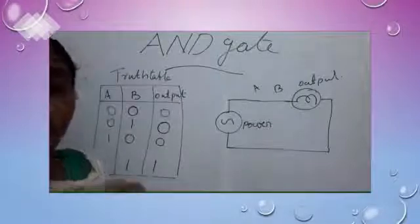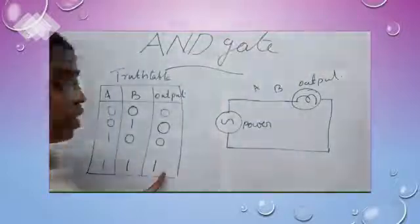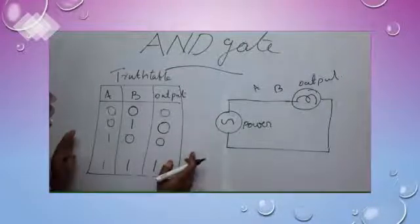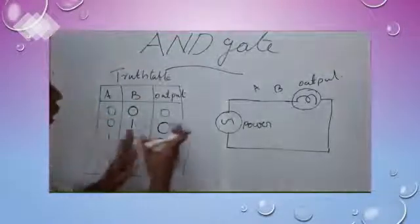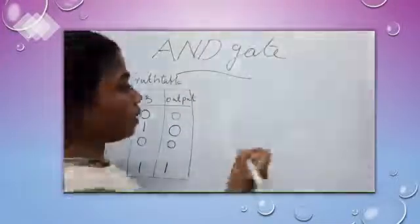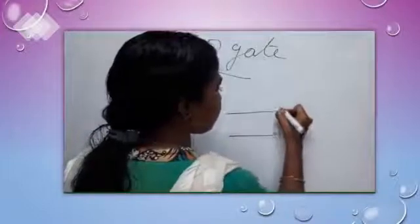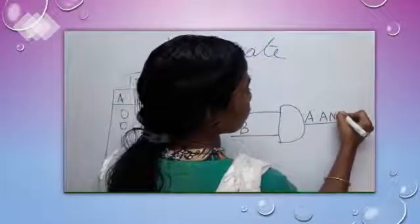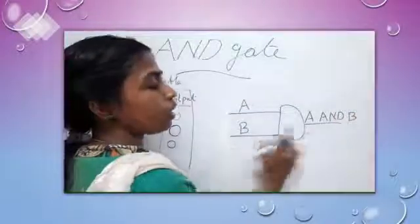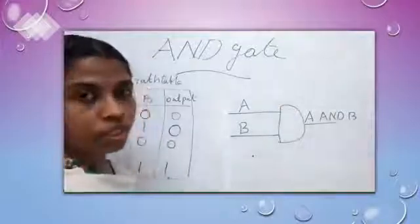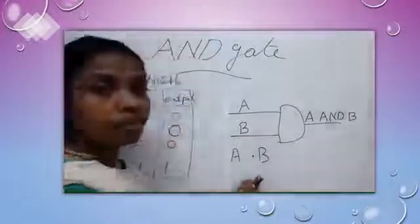In the case of AND gate, if all the switches are on or if the value is one, output is one. This is the truth table of AND gate. Truth table shows how the input is related to output. Next, I will show you how to represent the AND gate. We represent AND gate by this diagram. AND gate has two inputs, A and B, and its output is A and B. We use the dot operator for representing AND operation — if we write A dot B, it means A AND B.